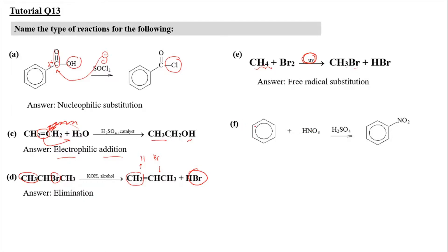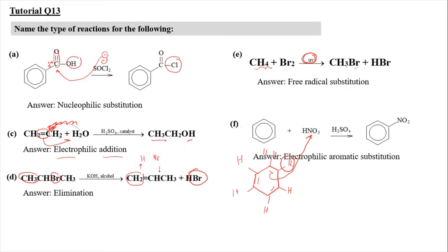For part F, we have the benzene ring — each carbon attaches with one hydrogen. One of the hydrogens is substituted with NO₂. So it is a substitution reaction because hydrogen is being replaced with NO₂. The nucleophilic side attacks the electrophile, so an electrophile is being added. Hence, this is an electrophilic substitution — and because it involves an aromatic ring, it is called electrophilic aromatic substitution.